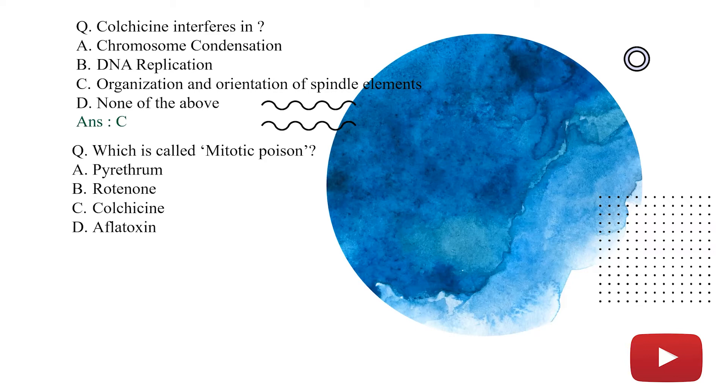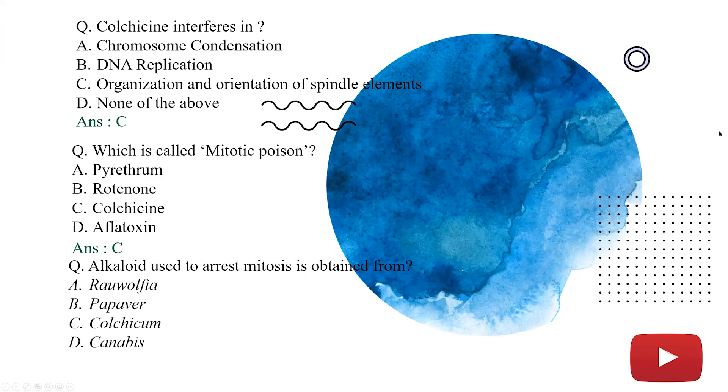Second question, which is called mitotic poison? Option A, pyrethrum. Option B, rotenone. Option C, colchicine and option D is aflatoxin. We are just humane padha ha tha ki colchicine is also known as mitotic poison. Toh, answer humara kya ho ga? Again, C. Answer is C, colchicine.